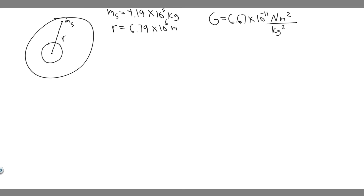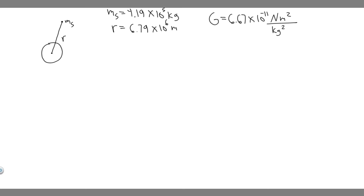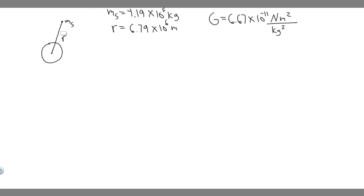So this is an image of what's going on. Imagine this is the Earth and this is the space station. They're going to have some distance R — essentially a radius because you can imagine it rotating like a circle. From the distance of the middle to the outside, they tell us this distance R is 6.79 times 10 to the 6 meters.